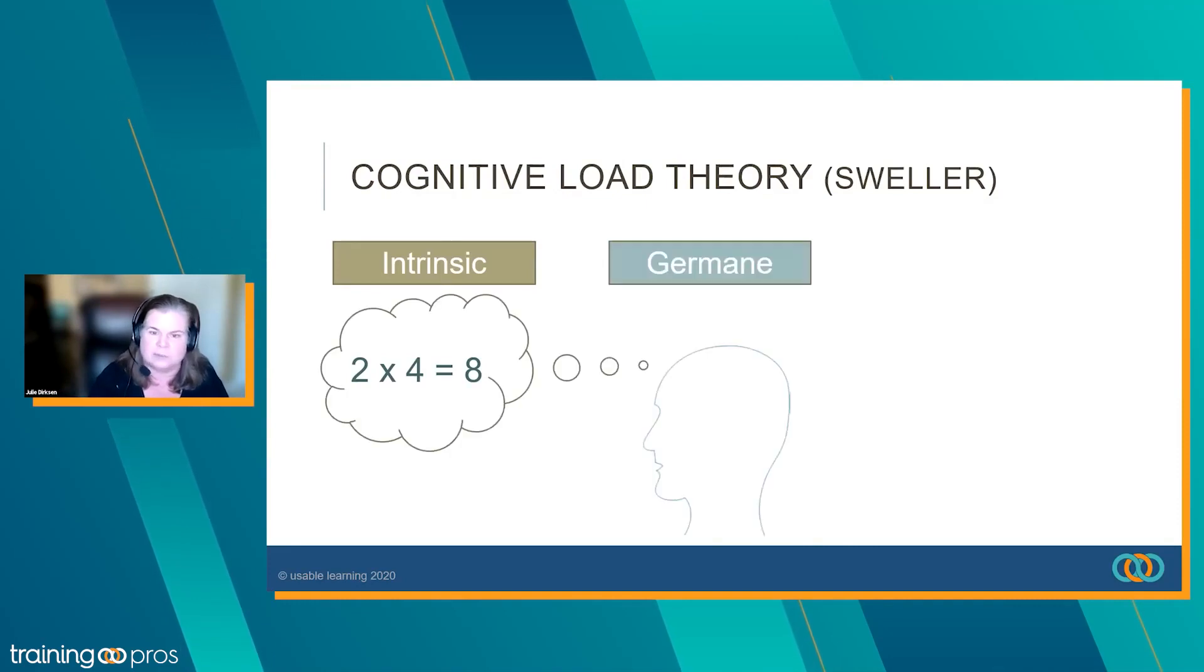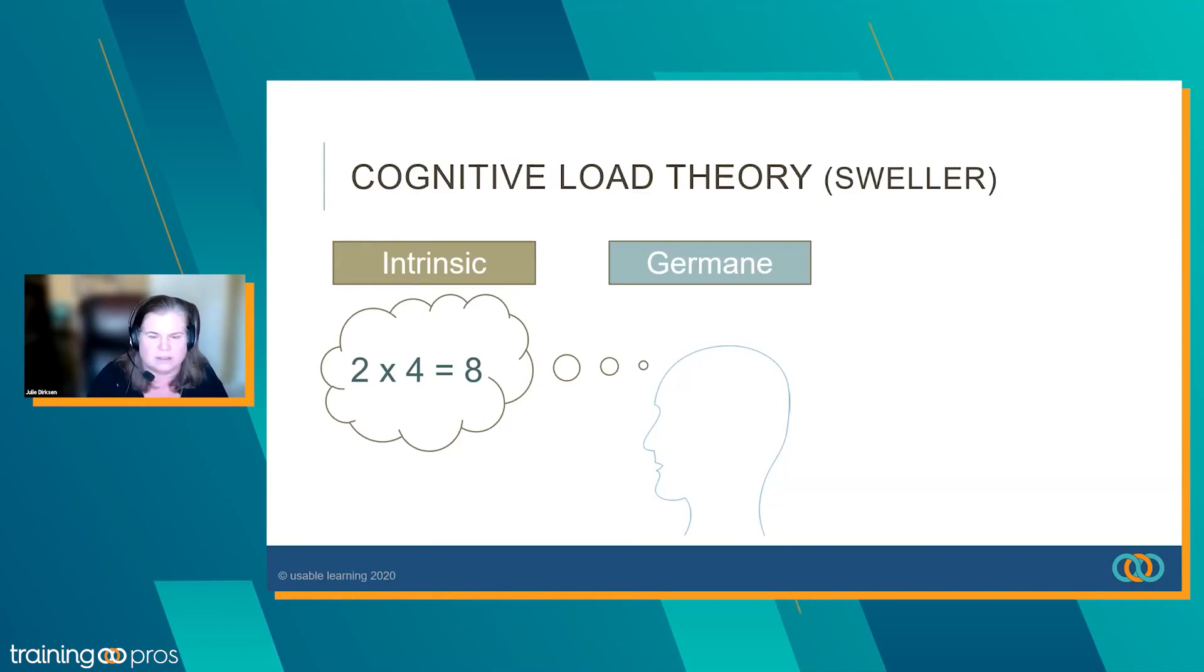And then there's the germane cognitive load, which is the learner interacting with it. And if you're a math professor, multiplication is going to have a pretty low germane cognitive load. But if you're a fourth grader, it's going to be much higher germane cognitive load.